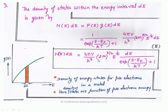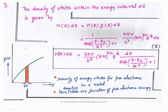The density of states within the energy interval dE is given by N(E)dE = F(E) × G(E)dE. We have already found the value of G(E)dE. Now we put the value of F(E), the Fermi-Dirac distribution function that defines the probability of the electron in a particular state. So the total number of electrons within that interval is: N(E)dE = (4πV / h³) × (2m)^(3/2) × E^(1/2) × dE / (exp((E − EF) / kT) + 1).